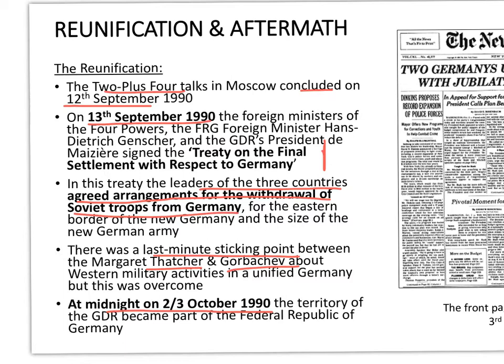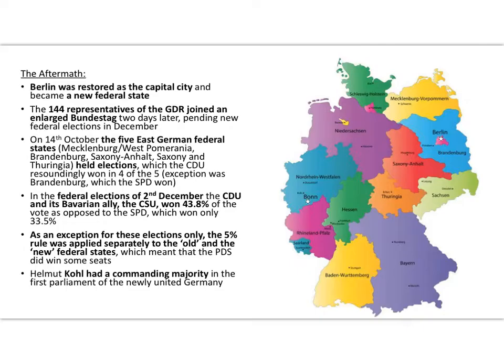At midnight on the second and third of October 1990, the territory of East Germany became part of the Federal Republic of Germany. The Federal Republic of Germany, which up to that point had only represented West Germans, now became a sovereign state representing all Germans.